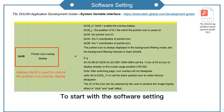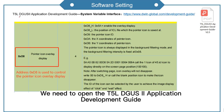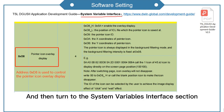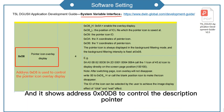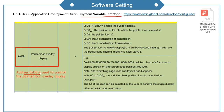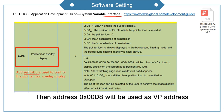To start with the software setting, we need to open the T5L DWIN 2 application development guide and then turn to the system variables interface section. A screenshot shows that address 00D8 is used to control the description pointer, so address 00D8 will be used as the VP address.